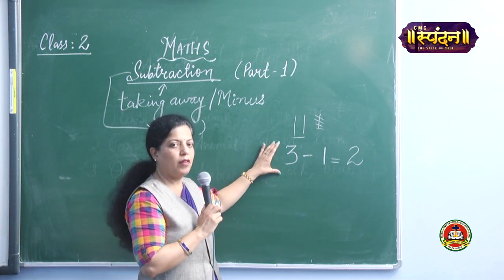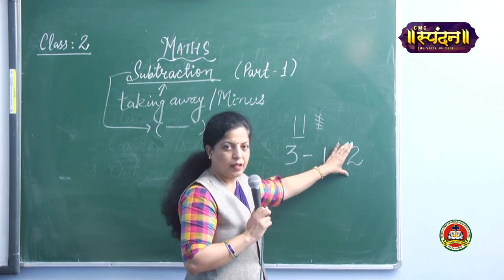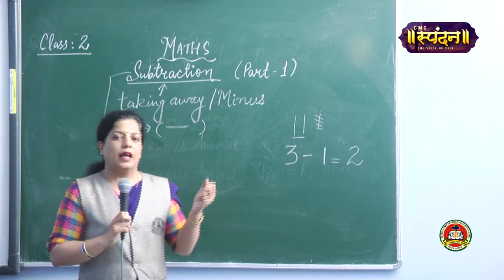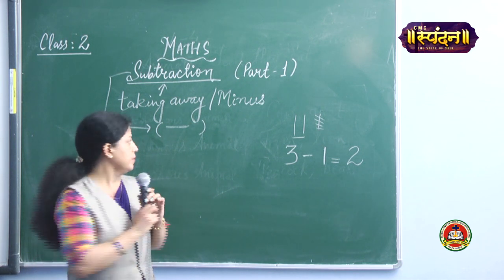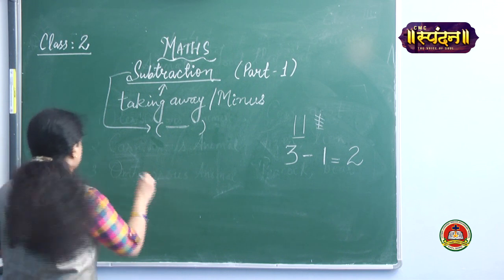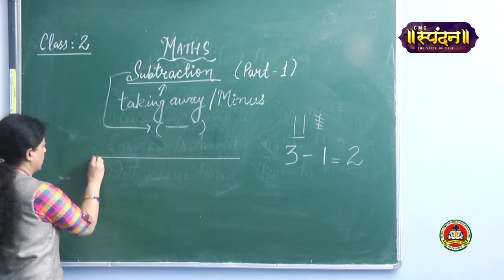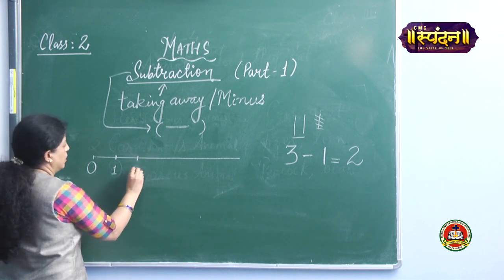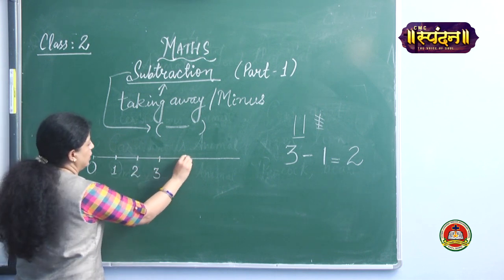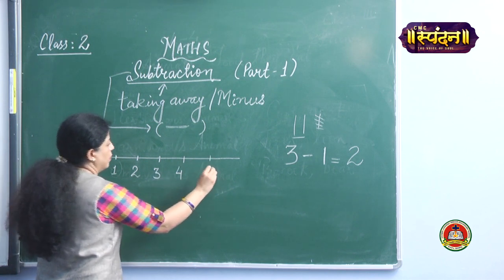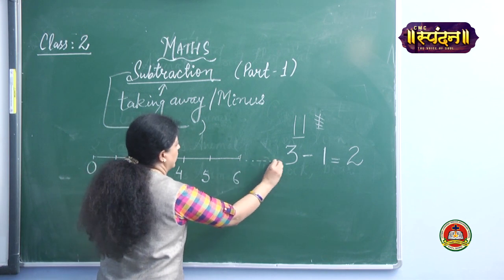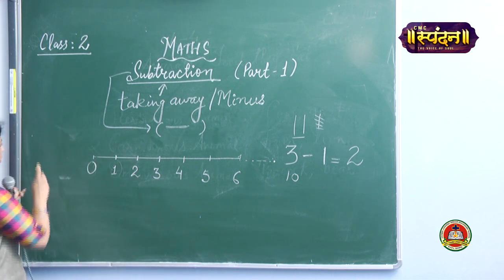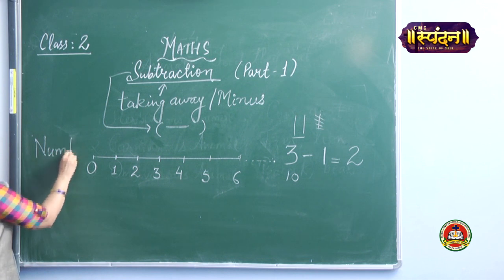First we did subtraction with the help of vertical writing, but now another way of finding the answer in subtraction is a number line. I will draw that number line for you. It will start with 0, then 1, 2, 3, 4, 5, 6, and it will continue up to 10. So this is a number line.